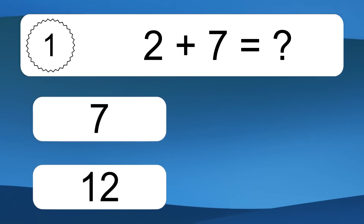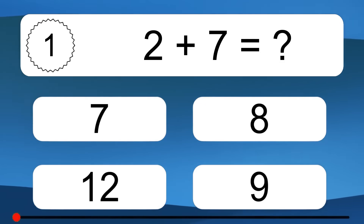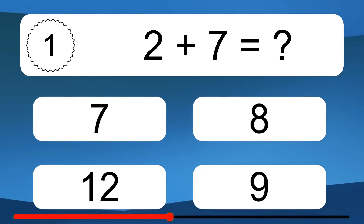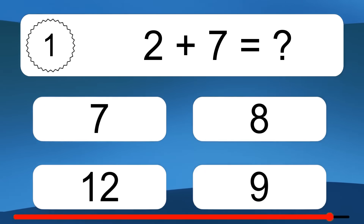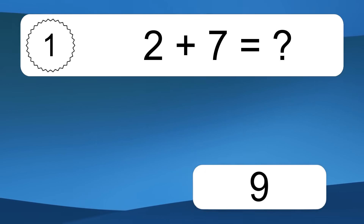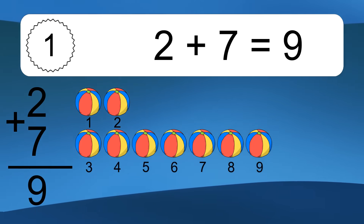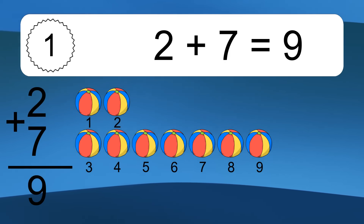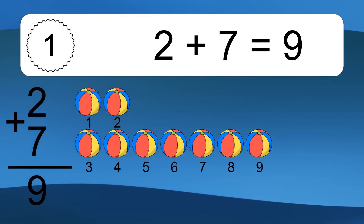2 plus 7 equals what? 2 plus 7 equals 9. Let's count it: 1, 2, 3, 4, 5, 6, 7, 8, 9.